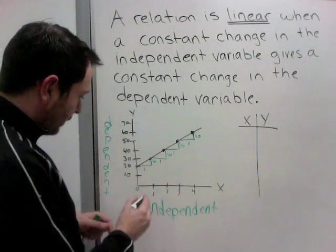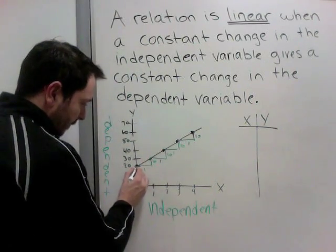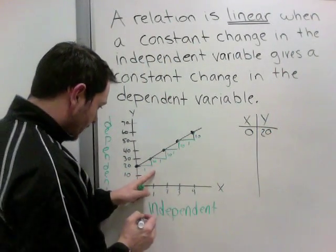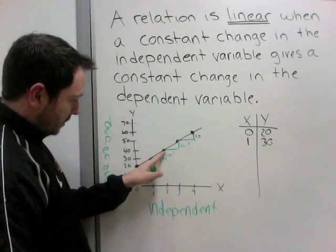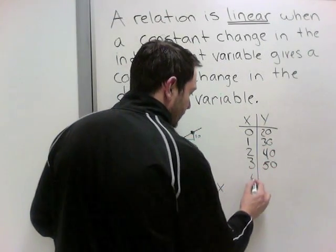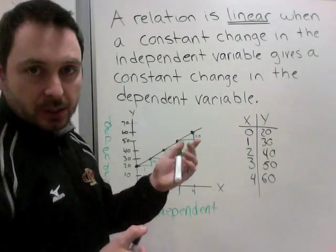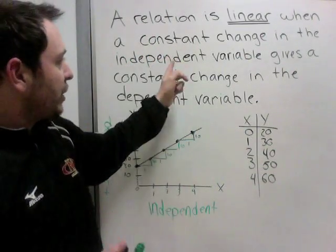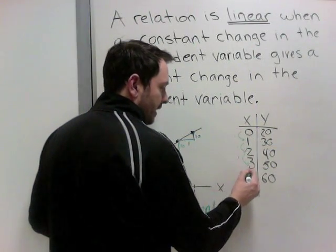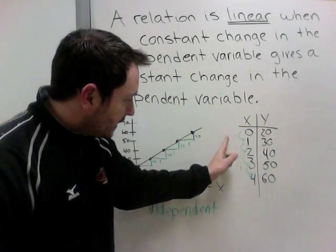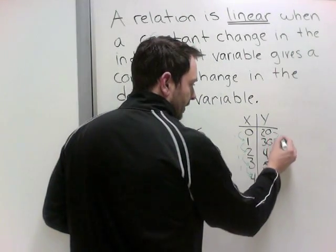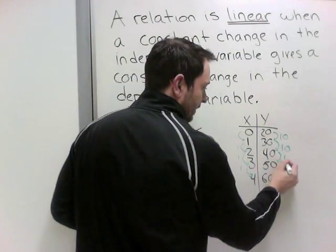In table of values form, we always list x then y — alphabetical order. When x is 0, y was 20. When x is 1, y is 30. When x is 2, y is 40. When x is 3, y is 50. When x is 4, y is 60. Using the definition: is there a constant change in the independent variable? It goes up 1, 1, 1, 1 — yes, constant. And the dependent goes up 10, 10, 10, 10 — also constant. So it is linear.